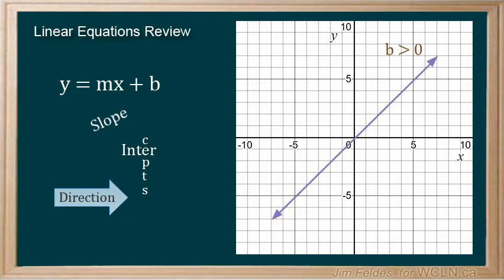Finally, as the constant term b becomes greater than zero, the y-intercept goes up, matching the value of b, or down as b becomes less than zero.